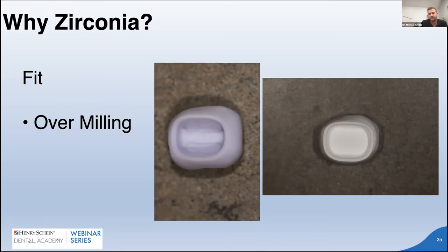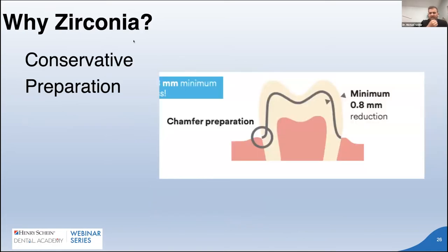After sintering and shrinkage, the margins are pristine. Conservative preparations are possible - the recommendation is 0.8mm minimum, though Dr. Snyder tells dentists 1mm since they tend to under-reduce. Margin type is flexible: a light chamfer or heavy chamfer both work. Zirconia is not as particular about prep requirements as glass ceramics. Ease of delivery is one of the biggest benefits - moisture-tolerant resin-modified glass ionomer is super simple and doesn't require a pristine prep.